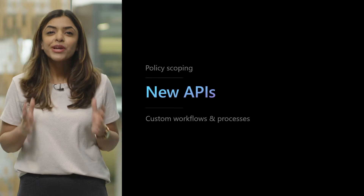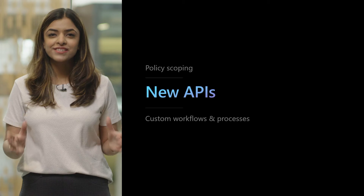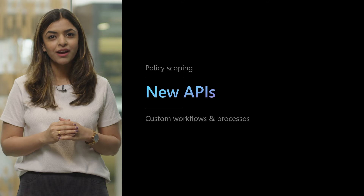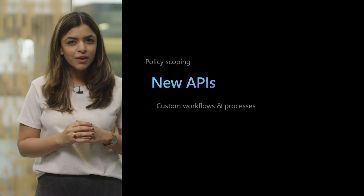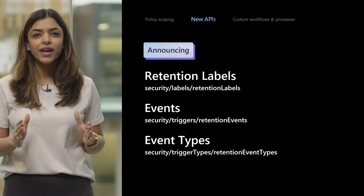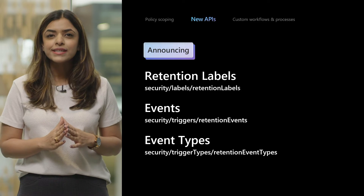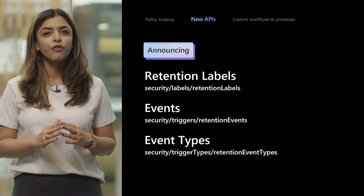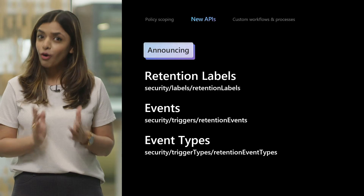For our next section on our first announcements, I'd like to welcome Samridi Seth, one of our amazing product managers on our team, who has some news to share. Today we are announcing three new APIs, which are the first release of data lifecycle and records management to Microsoft Graph, as part of our extensibility vision that was already covered by Roberto.